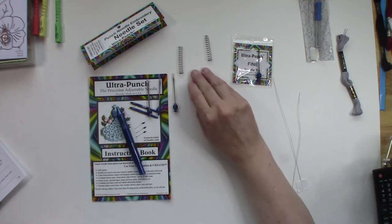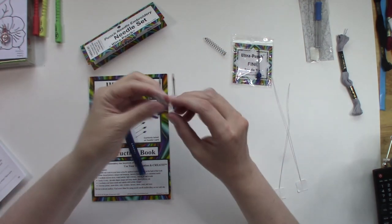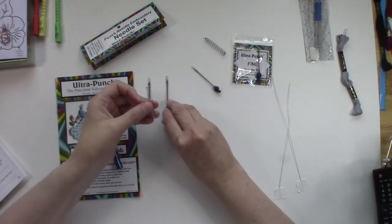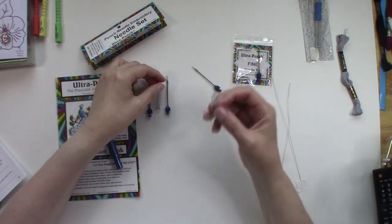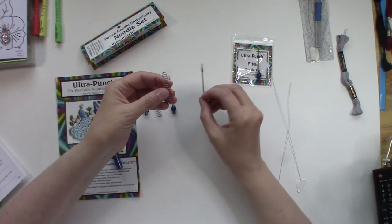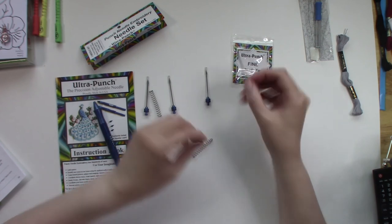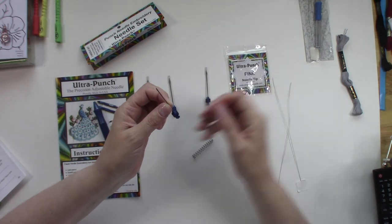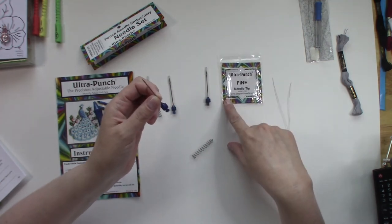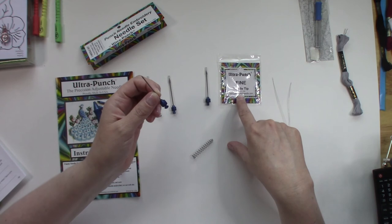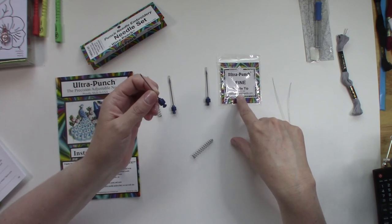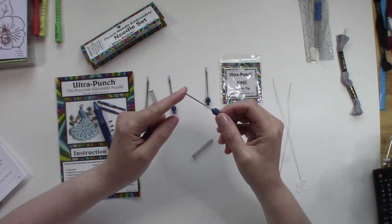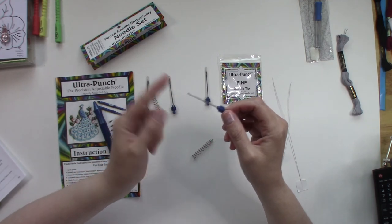Then it also comes with two springs. Your larger spring is for your medium and large needle. Then your smaller spring is for your small needle. And then if you purchase separately an extra fine needle, I bought my needle separate and like I said I believe it was a little over $4. The ultra fine needle is for one to two strands of floss.